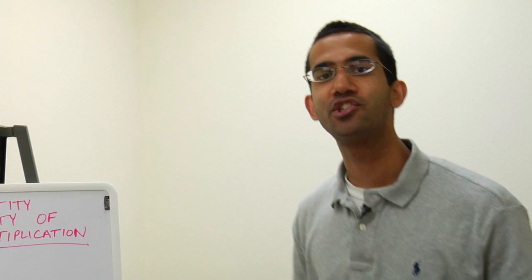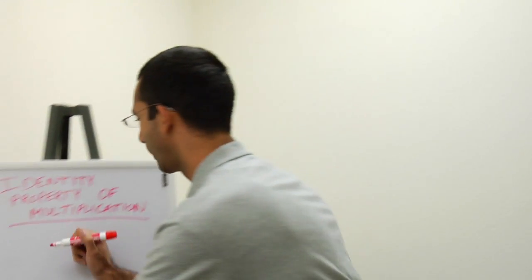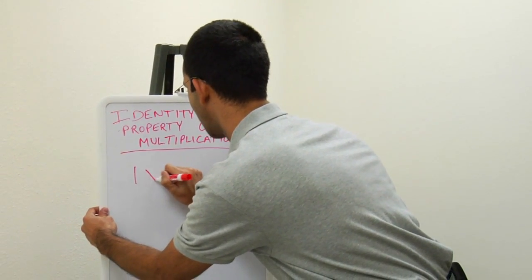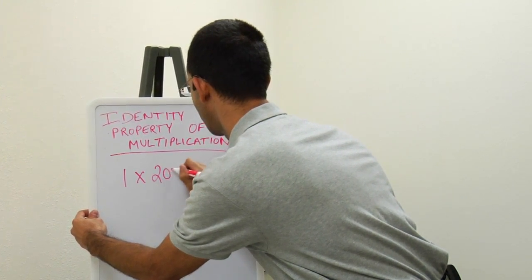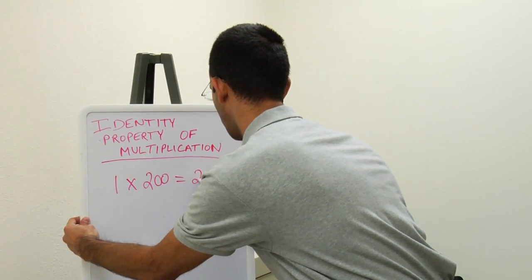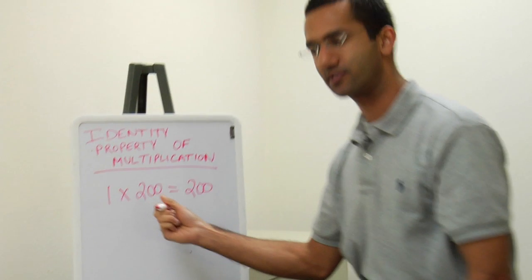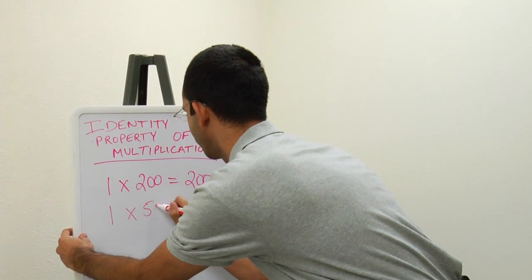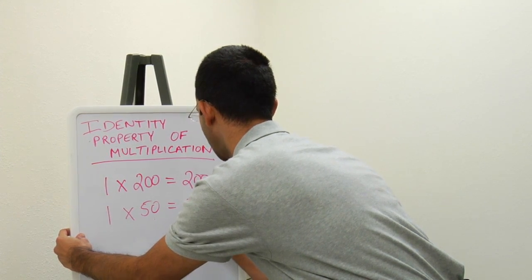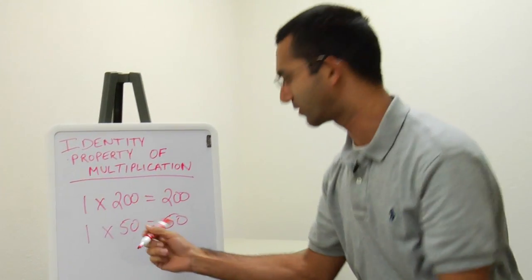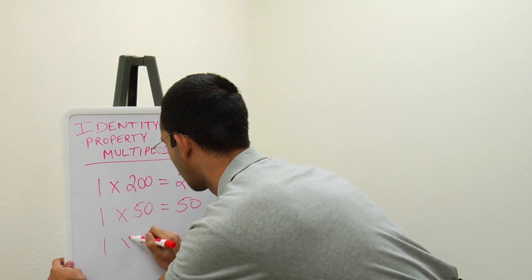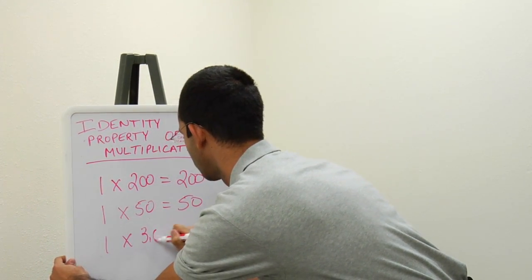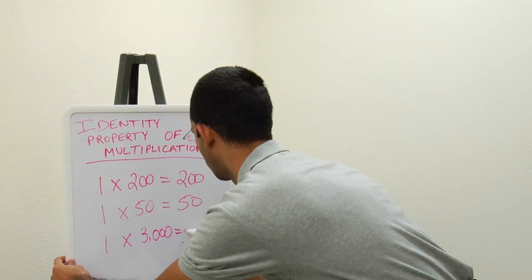So I will illustrate this with a few examples. We have 1 times 200 equals 200. Another example would be 1 times 50 equals 50. And another example would be 1 times 3000 equals 3000.